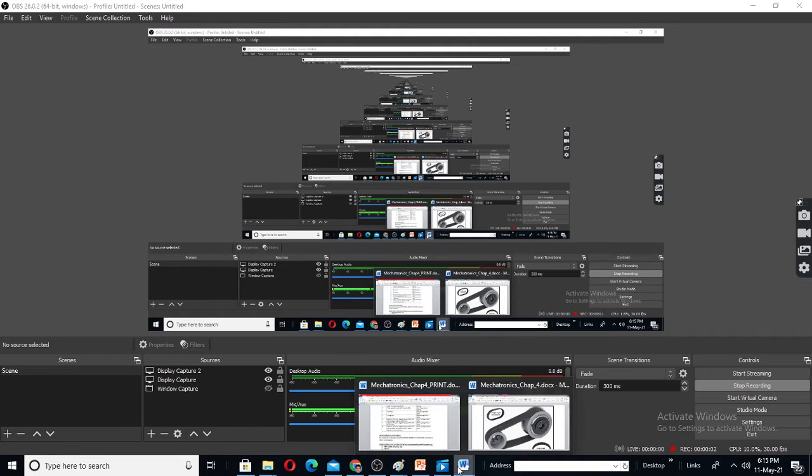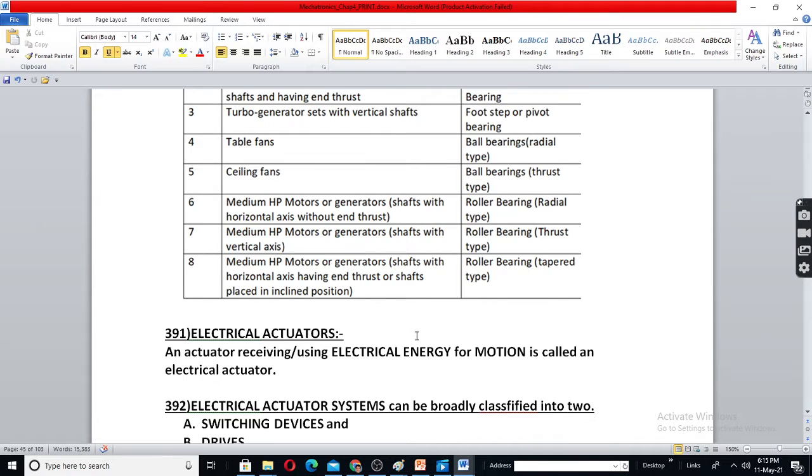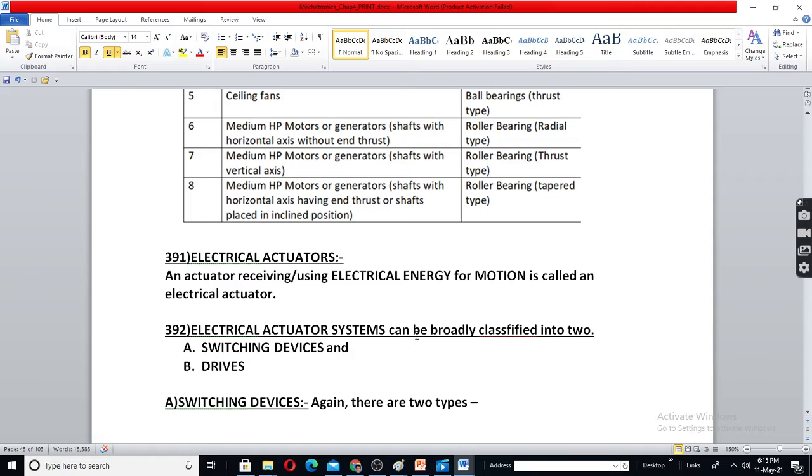Class 195 means electrical actuators or electrical actuator systems. It is a system where electrical energy is used for motion.